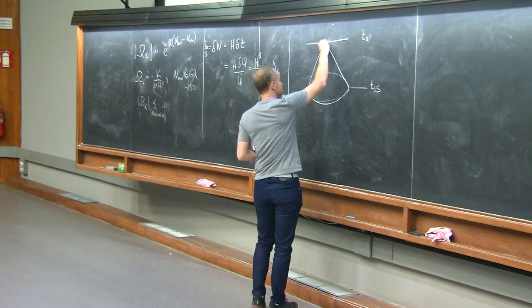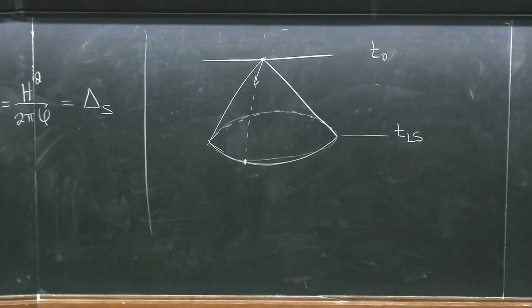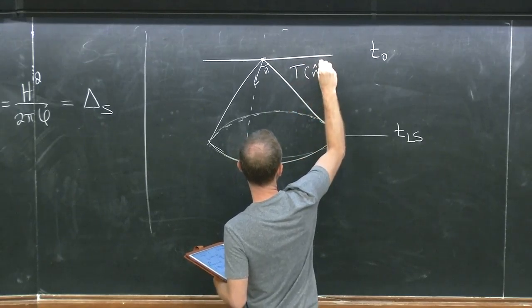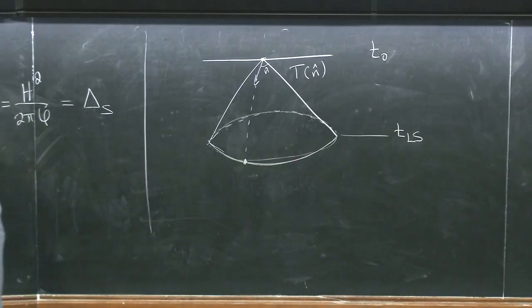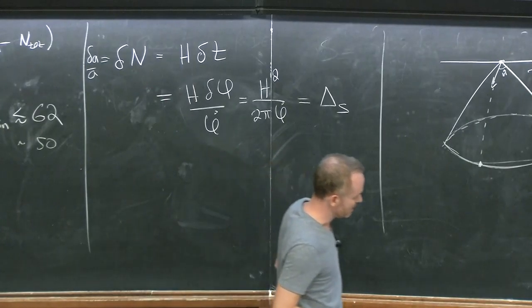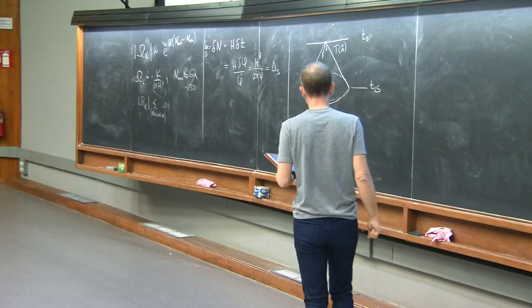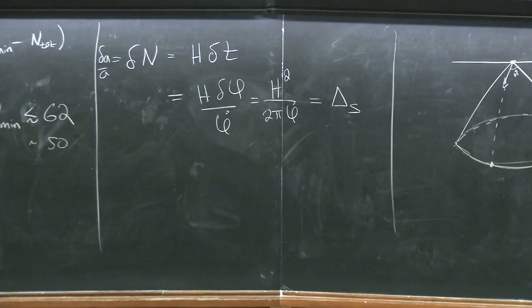You measure the temperature as a function of angle — T of n-hat. The CMB is almost a perfect black body, so when you look in a particular direction you see a black body spectrum with a temperature associated to it. You measure T(n-hat) for every point on the sky, and that's your CMB data set. The temperature at each point is directly related to delta N at that co-moving point at the end of inflation, because if inflation ends later, the universe re-heats later at that point and would be hotter.